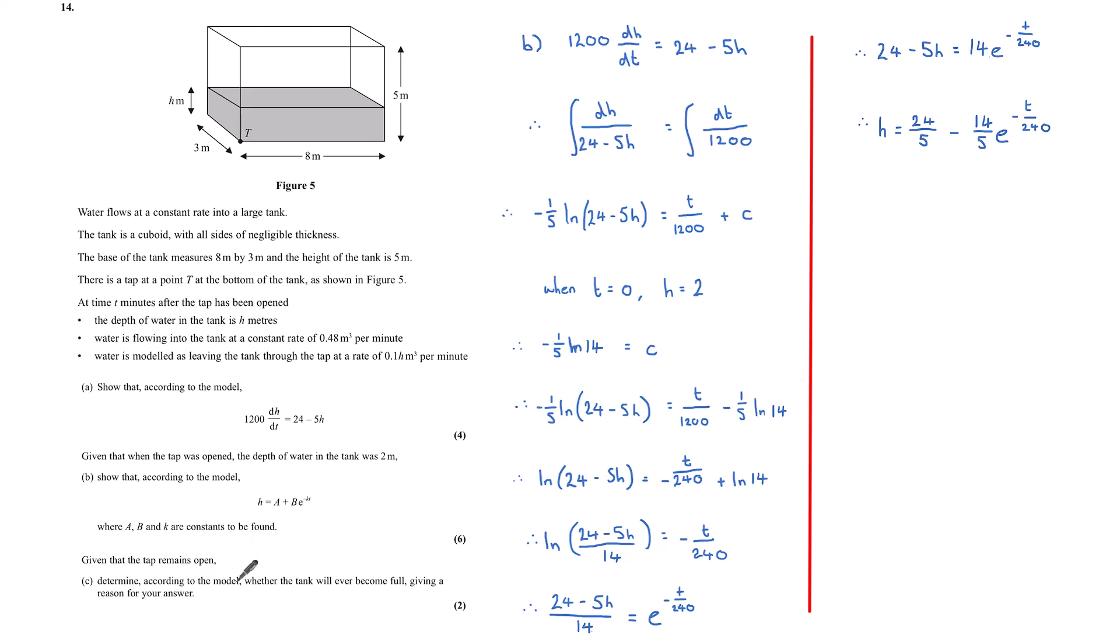Given that the tap remains open, part c determine, according to the model, whether the tank will ever become full, giving a reason for your answer. Full would be, I mean, here's the height of the water, it's 5 meters high. If this height ever reaches 5, then we would be in trouble.